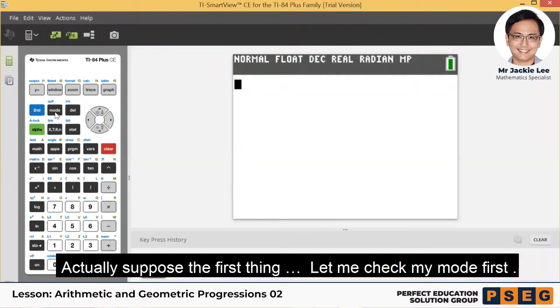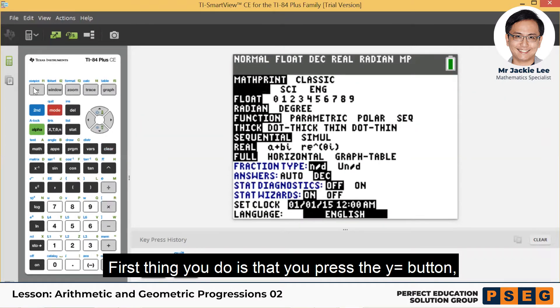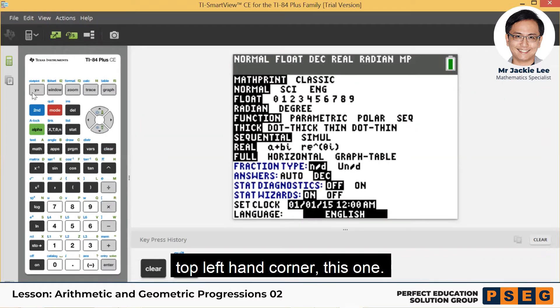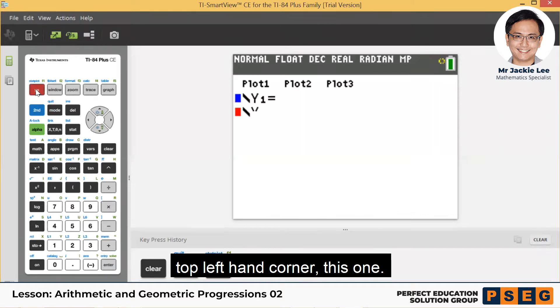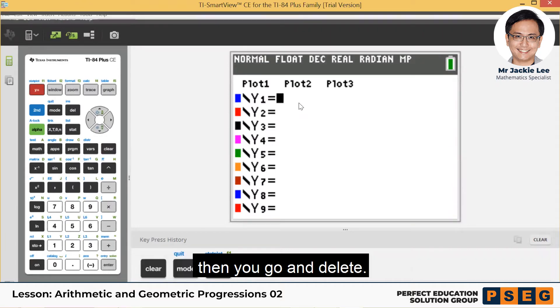Let me check my mode first. Okay, first thing you do is press the Y= button, top left hand corner, this one. You should see this inside. If there's anything left behind, then you go and delete.